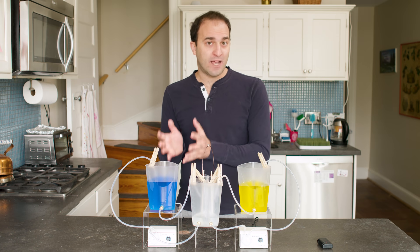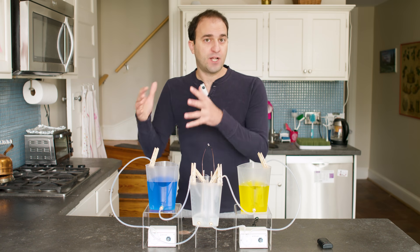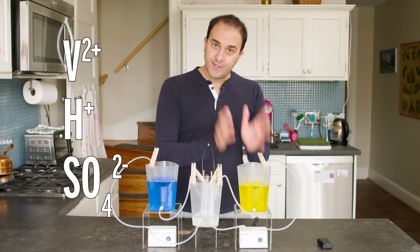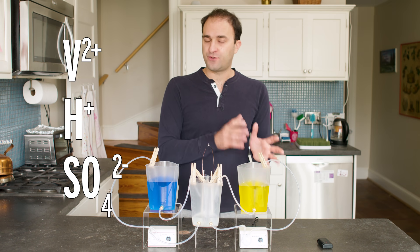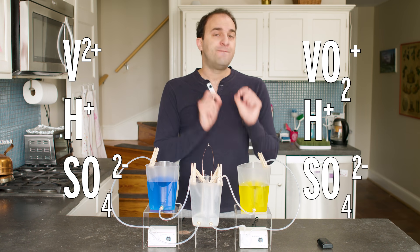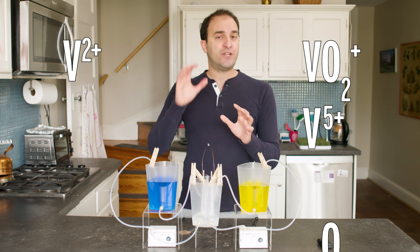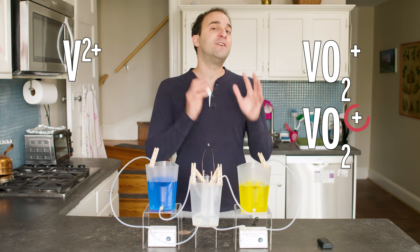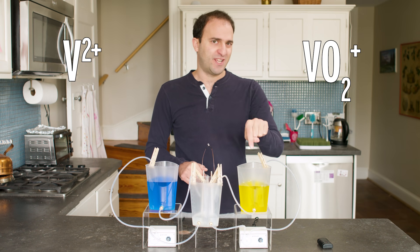This container here holds the anolyte, which I've colored blue. Now this is a solution of vanadium in the 2+ oxidation state, dissolved in concentrated sulfuric acid. So you've got V2+, H+, and SO4 2-. This container here holds the catholyte, which I've colored yellow. This is vanadium dioxide, also dissolved in concentrated sulfuric acid. So you've got VO2+, H+, and SO4 2-. VO2+ means that the vanadium is in the 5+ oxidation state, because each oxygen takes two electrons, that's minus four, and then to get the whole compound to a +1 overall charge, vanadium needs to be 5+. So we've got vanadium in the 2+ oxidation state here, and vanadium in the 5+ oxidation state here.